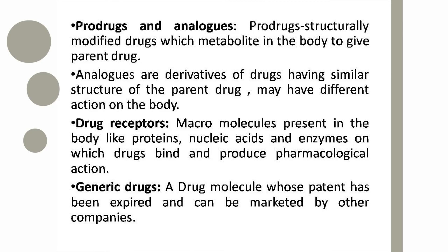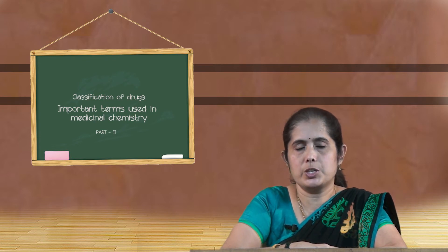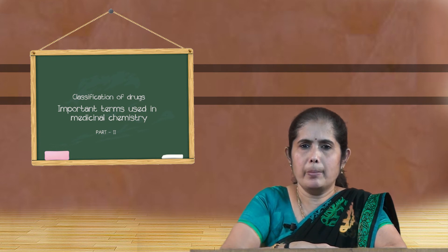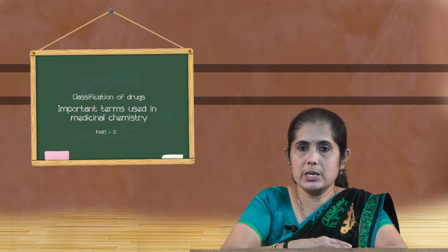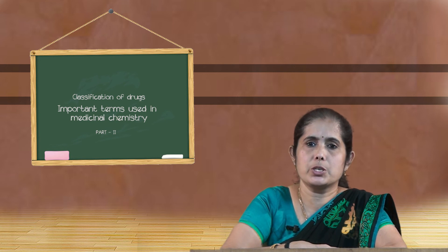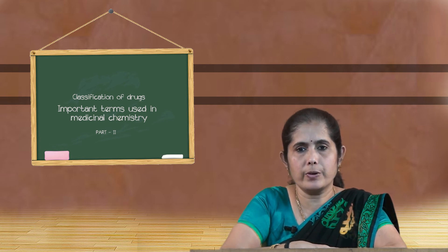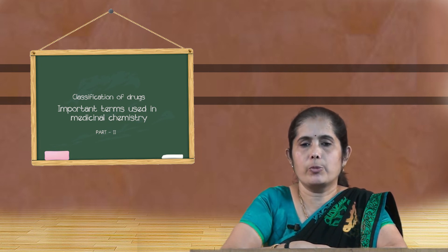Analogs are derivatives of a drug having a similar structure to the parent drug but different action on the body. A company inventing a new drug may look into different analogs of that drug. A series of compounds — maybe 100 analogs — will be prepared and subjected to clinical trials. Maybe 4 or 5 among them may give positive results, meaning they have pharmacological action.